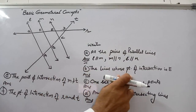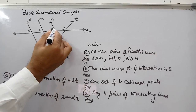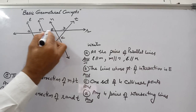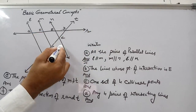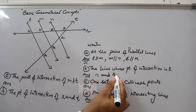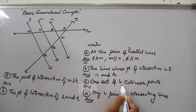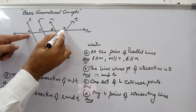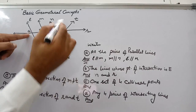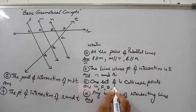The next question is: find the lines whose point of intersection is E. On point E, we can see R line and N line are intersecting. So N and R are the two lines where the point of intersection is E. Next is one set of four collinear points. Points G, F, E, and D — all four points are on the same line.